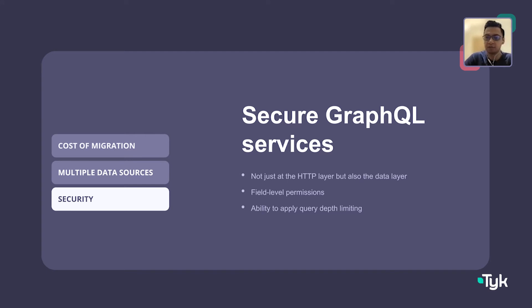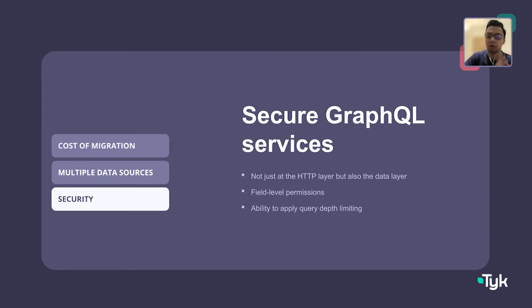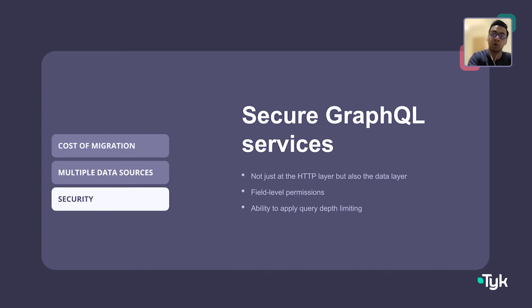Finally, even with migration addressed, security is a critical challenge. While REST endpoints work primarily at the HTTP layer — where you secure the endpoint with authentication and authorization mechanisms — GraphQL operates on two levels: the HTTP layer and the data layer, which handles all the different queries and data being requested and returned. You need a mechanism to secure both.